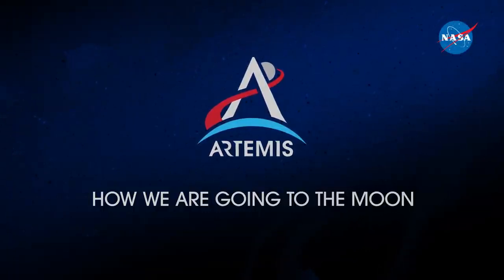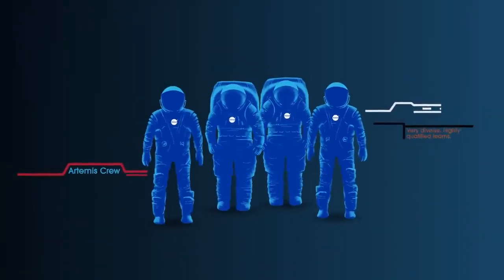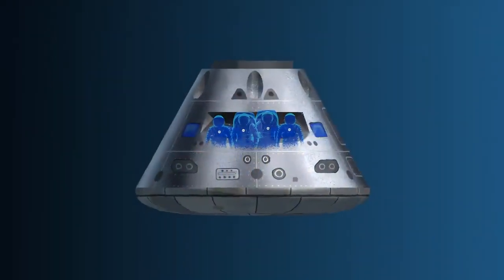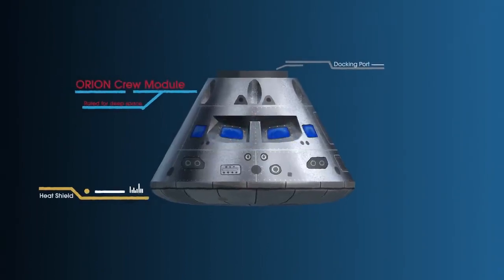Everything is designed and tested with our most important element in mind, the astronauts. This is their deep-space, human-rated spacecraft called Orion, built in three parts.